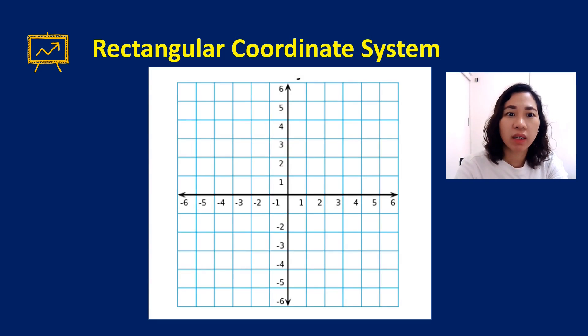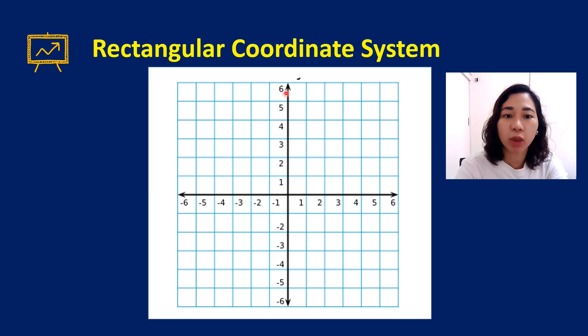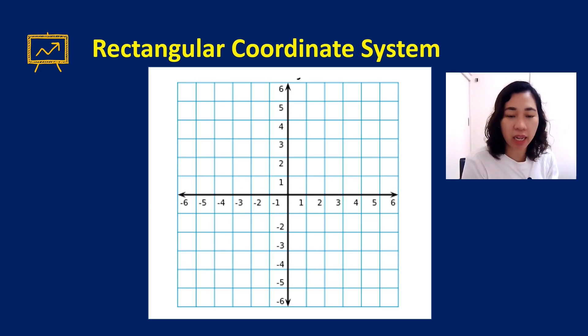Today we are going to talk about the rectangular coordinate system, also known as the Cartesian plane. This is just a flat surface defined by two perpendicular number lines — a vertical line and a horizontal line.